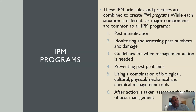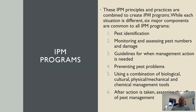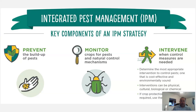Key principles for IPM programs include: pest identification, monitoring and assessing pest numbers and damage, establishing guidelines for when management will be needed, preventing pest problems, using a combination of biological, cultural, physical, mechanical, and chemical management tools, and after action, assessing and monitoring the effect of your pest management. The goal is to prevent pest build-up before it starts, and when pests do appear, monitor them and intervene when necessary.